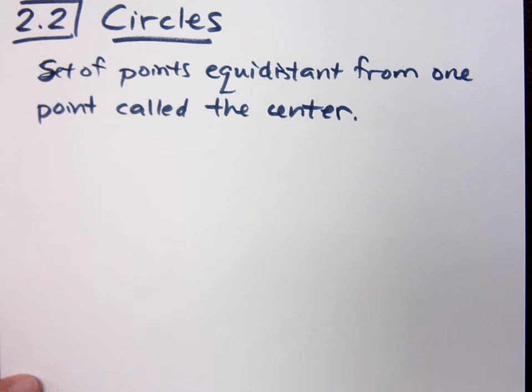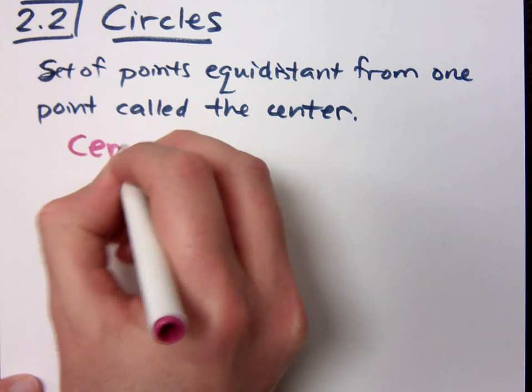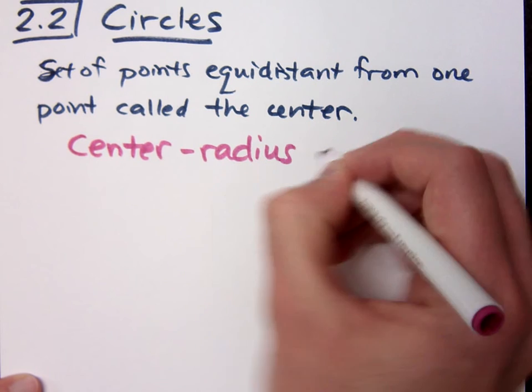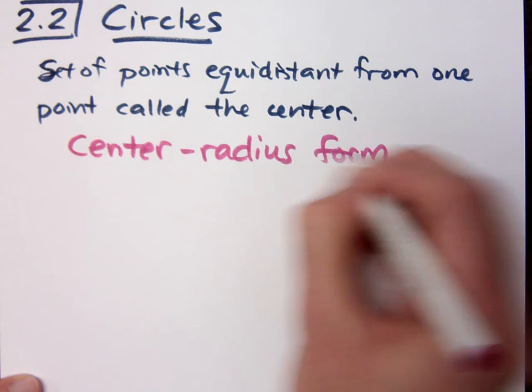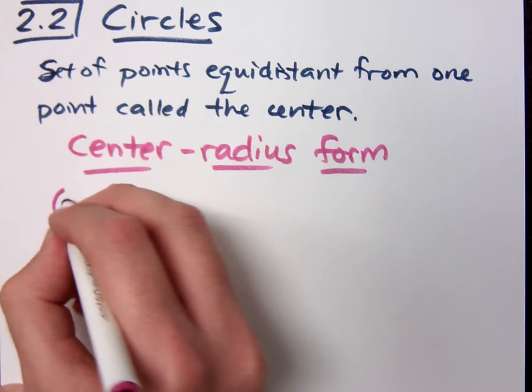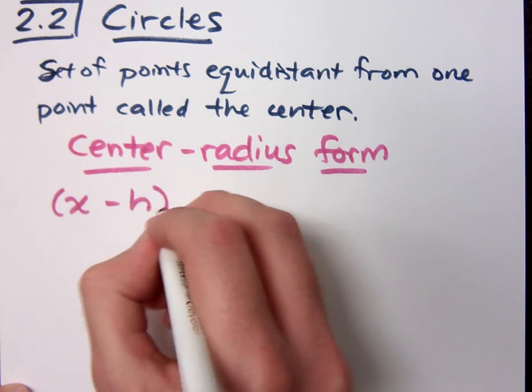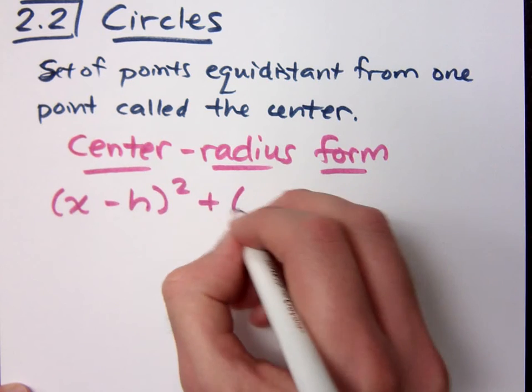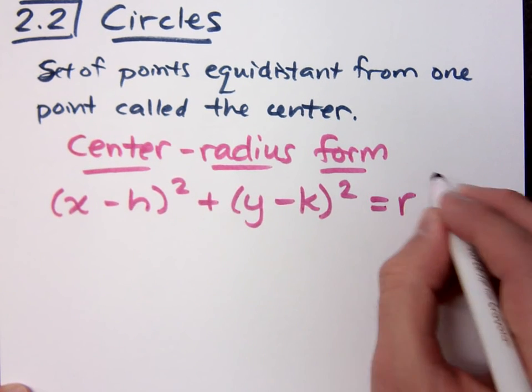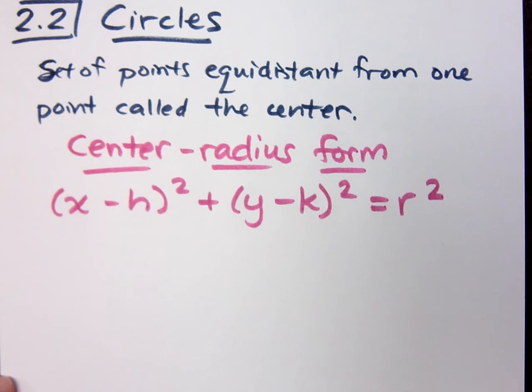Now, we have a few forms here. And one that you're going to like is called the center-radius form. And this is the center-radius form: (x - h)² + (y - k)² = r². This is a form.